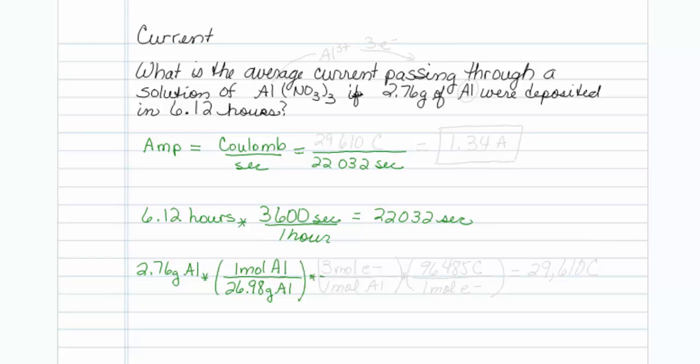Now, it would be more helpful if we knew how many moles of electrons. Hopefully you're looking at aluminum nitrate and saying, aluminum nitrate, that is aluminum 3 plus, and I'm going to aluminum. That must take three electrons. So I can say that there are 3 moles of electrons for every one mole of aluminum.